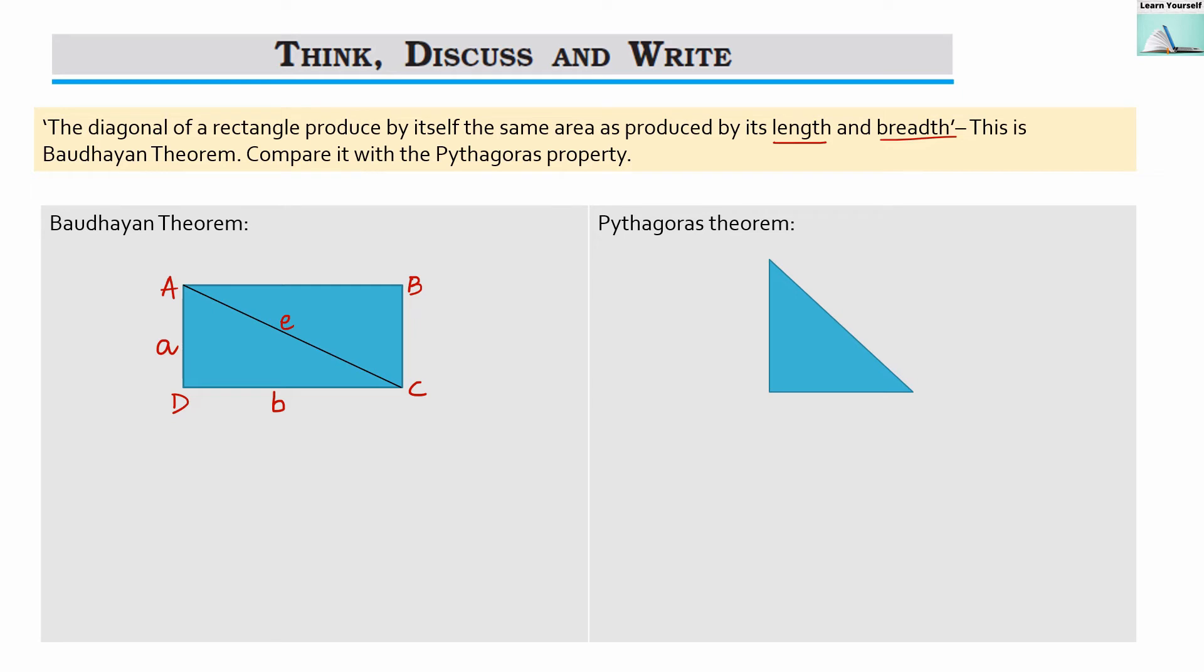Now let us understand the statement for Baudhayan theorem, the diagonal of a rectangle produced by itself, the same area as produced by its length and breadth. So from the Baudhayan theorem, we can write here that E square equals to A square plus B square.